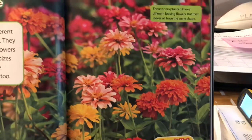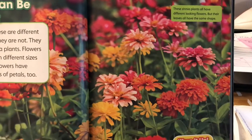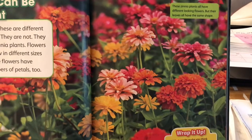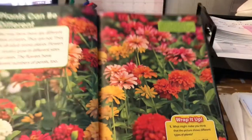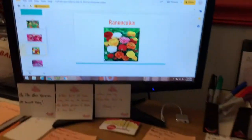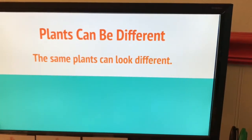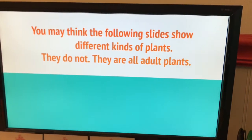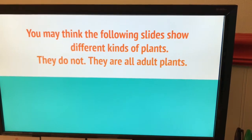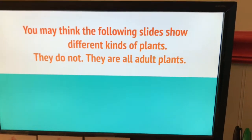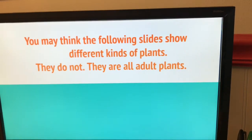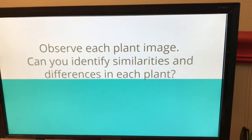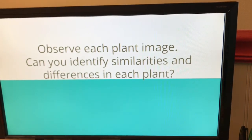They look very different from each other, however they are all adult zinnias. The flowers are very different looking. So now I want to show you a few pictures. The same plants can look different, just like we saw with the zinnias. You may think the following slides show different kinds of plants — they do not. They are all adult plants. Observe each plant image. Can you identify similarities and differences in each plant?